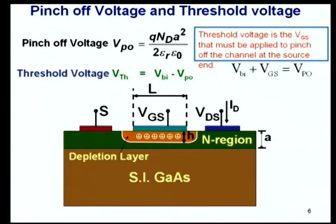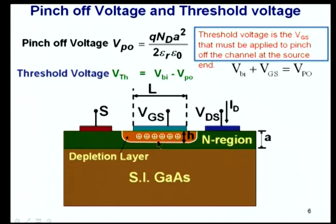Before discussing this device further, let's define the pinch-off voltage. Pinch-off voltage is the potential that must exist across the depletion layer to completely deplete the channel. Due to a potential VP0 across the depletion layer, if the channel is completely depleted there is no current flow — the channel is pinched off from source to drain. From the abrupt junction model, the pinch-off voltage is VP0 = q·ND·A² / (2·ε·ε0), where ND is doping, A is the layer thickness, and εr ≈ 12.8 for gallium arsenide.